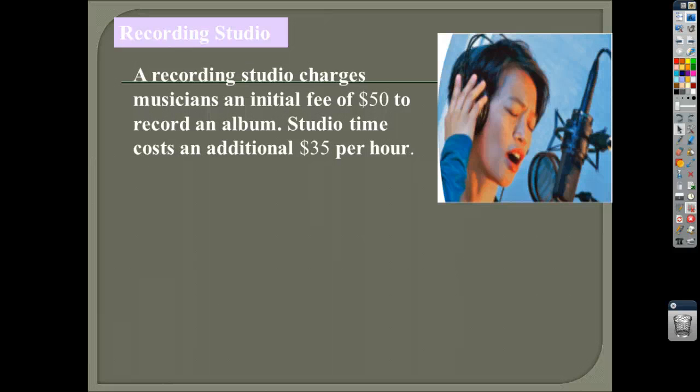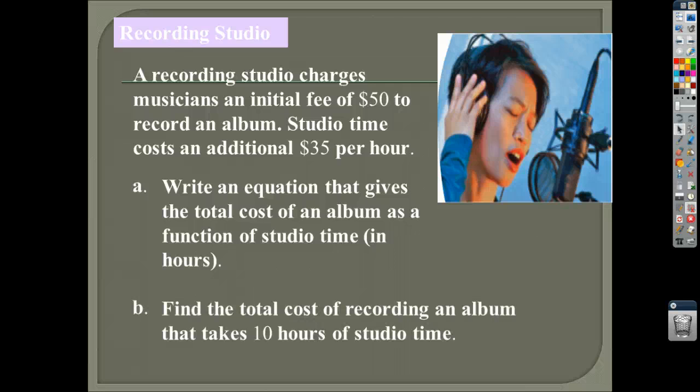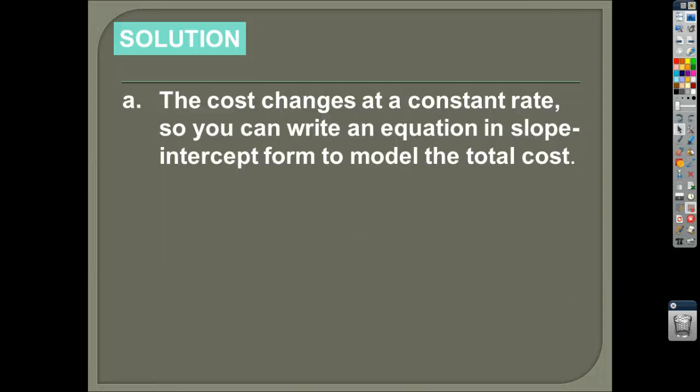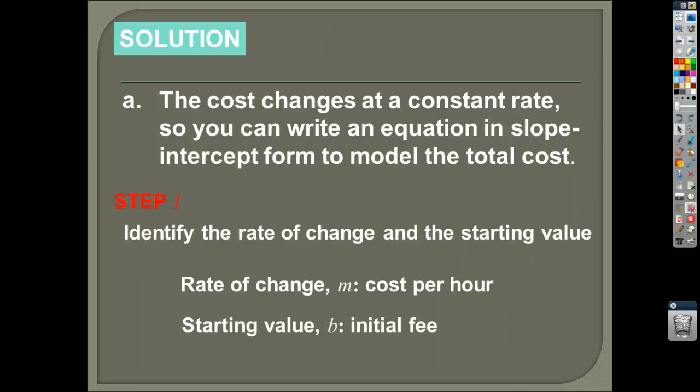So this is straight out, this is a word problem we got. Recording studio charges musicians an initial fee of $50 to record an album. Studio time costs an additional $35 per hour. So here's what I want you to do. I want you to try to write an equation that models that situation. That's going to go back with more of the CED one, right? Creating an equation in two or more variables to represent relationships. So why don't you go ahead and try to do that. So we're going to write, yes, we said that already. And then we're going to find the second part, we'll find the cost at 10 hours of studio time. Cost changes at a constant rate. So you can write an equation in slope intercept form to model the total cost. Right? Average rate of change. We know that. The rate of change in this problem is the cost per hour. And the starting value, B, is the initial fee.